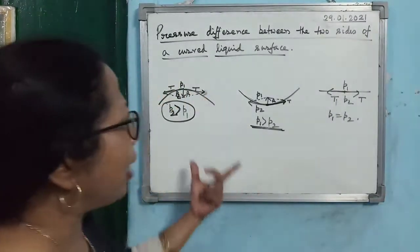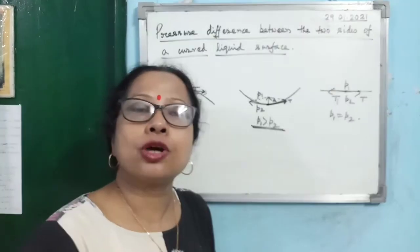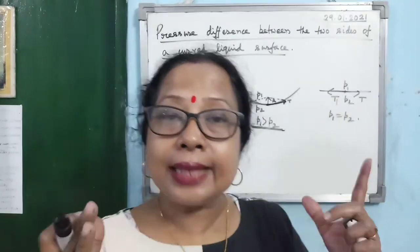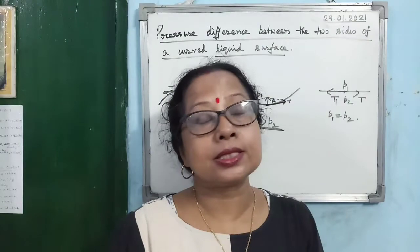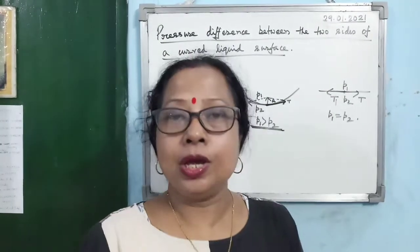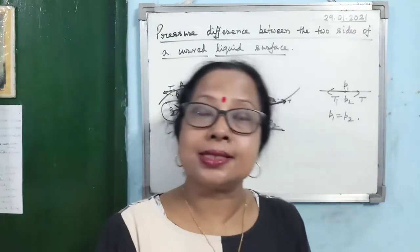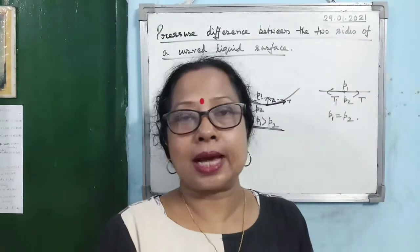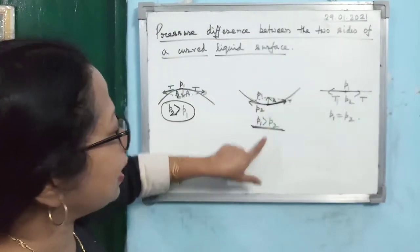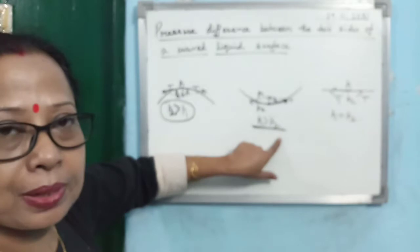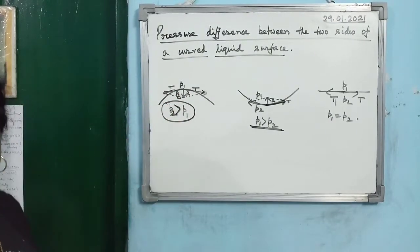This is a fundamental concept: if the free surface of a liquid is curved, then the pressures above and below the liquid surface are not the same. Pressure is always greater on the concave side. In the convex meniscus case, the concave side pressure P2 is greater than P1; in the concave meniscus case, P1 is the concave side pressure and is greater than P2.